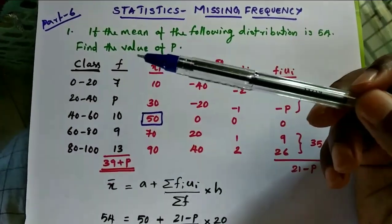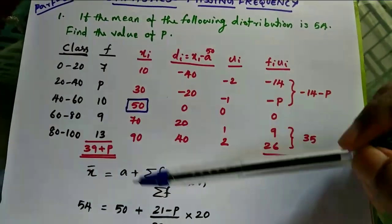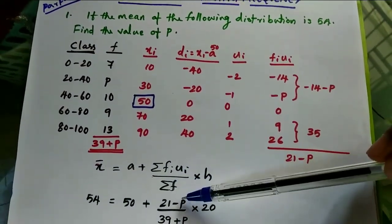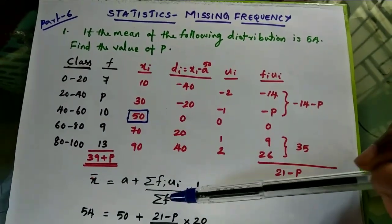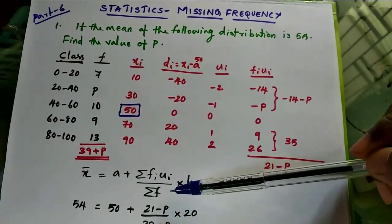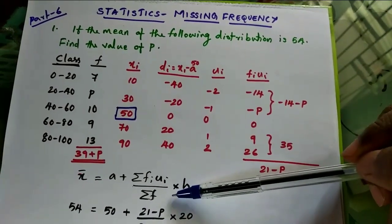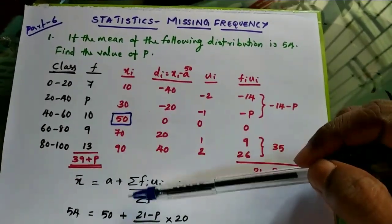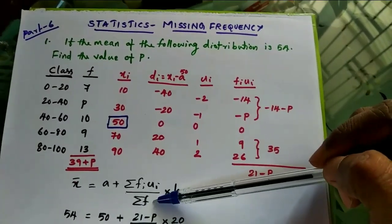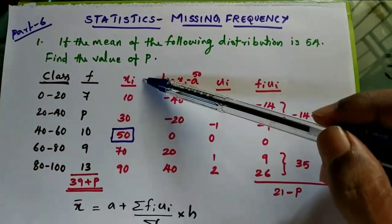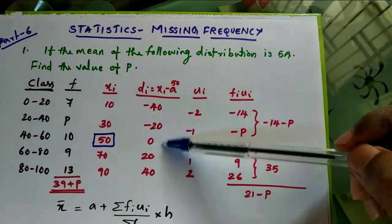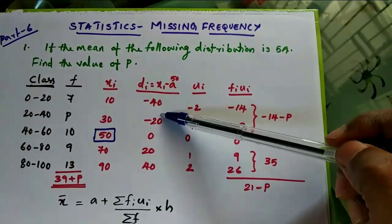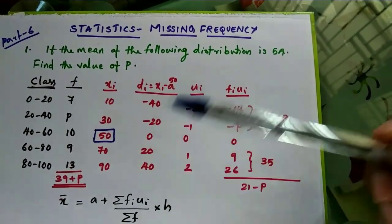To find p, we are using the step deviation method: x-bar equals a plus sigma(fi·ui) divided by sigma(f), into h. We can also use the direct method or assumed mean method. Here I will use the step deviation method. We set up column xi, column di, and select assumed mean a = 50, computing xi minus 50, then complete the ui column.